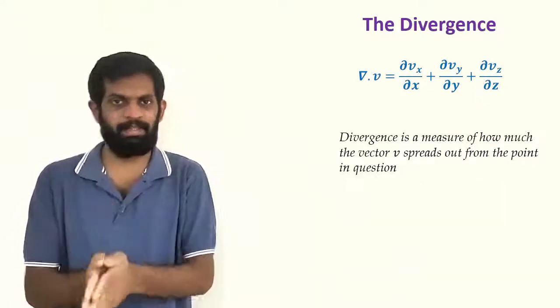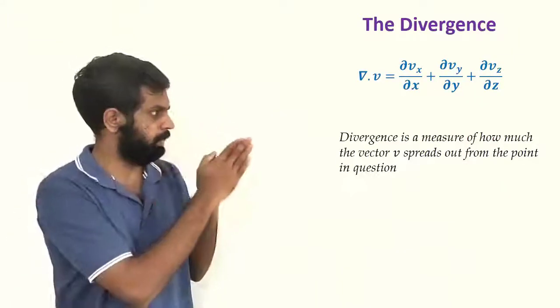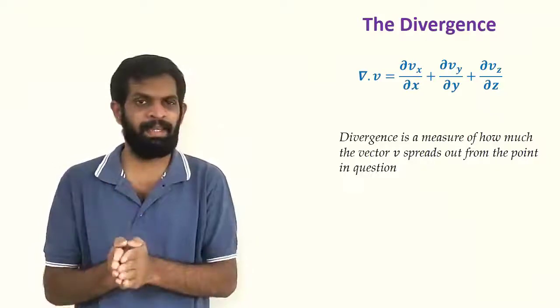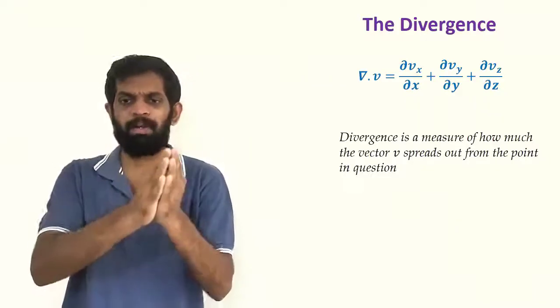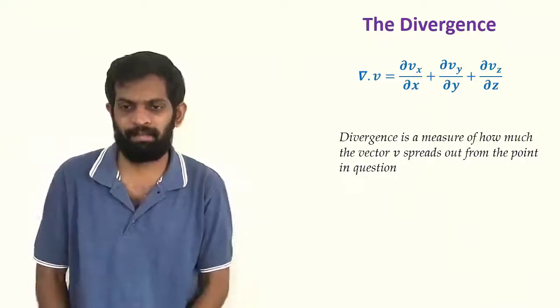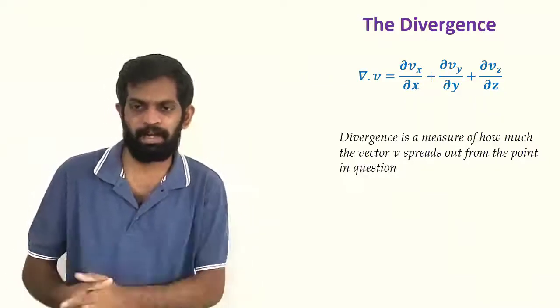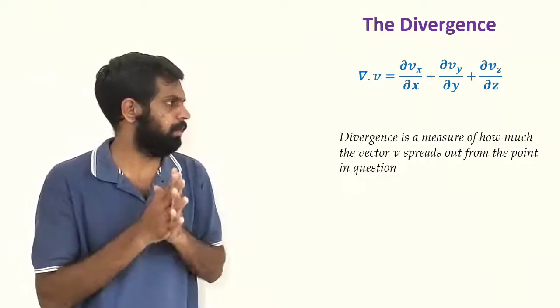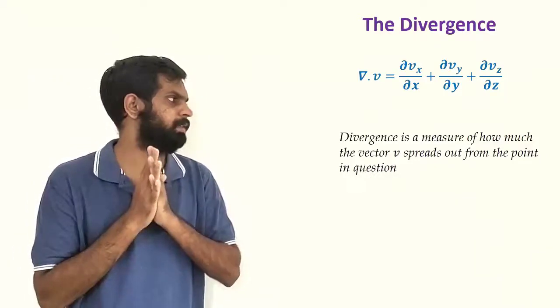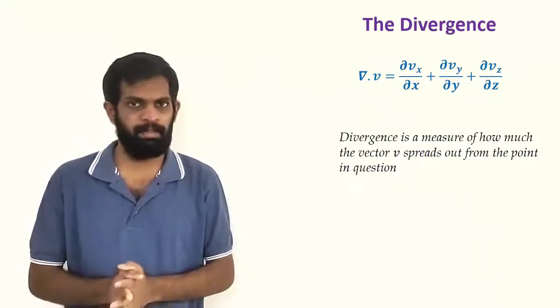What is the physical meaning of divergence? Divergence is a measure of how much a vector spreads out from the point in question.